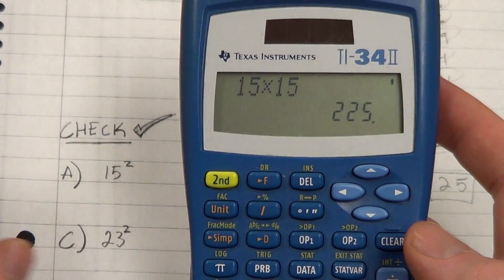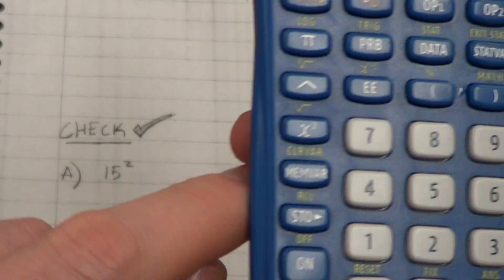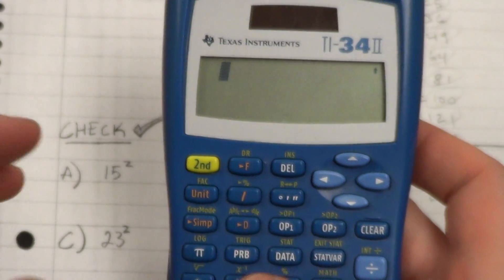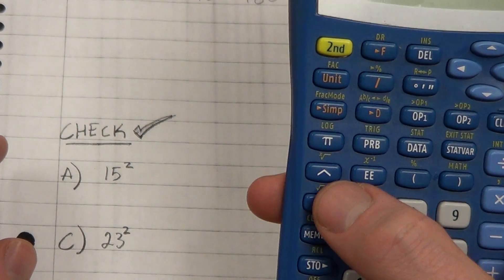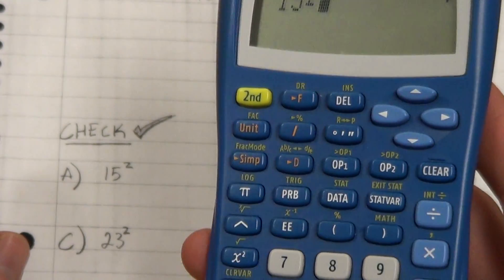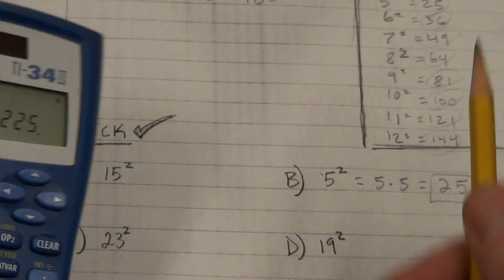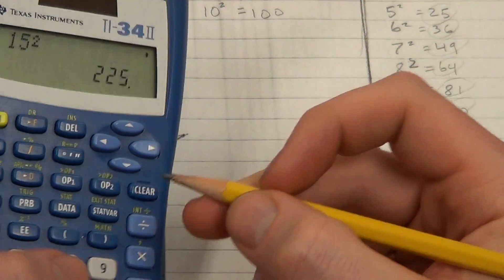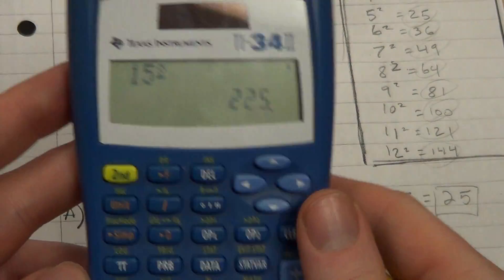Now of course you can just type in 15 times 15 in order to figure that out, it's 225, or there's a shortcut button for squaring. Right here, there's a little x squared button. And what you do is, you type in the base, so I type in 15, and then if you hit the x squared button, you'll notice there's a little squared on the 15. And now all I have to do is hit equals, and there it is again, 225. Now I prefer the x squared button because it's faster.